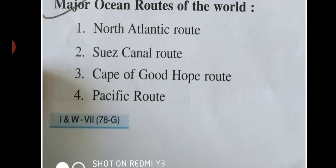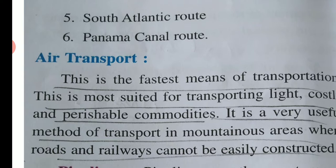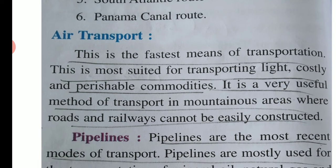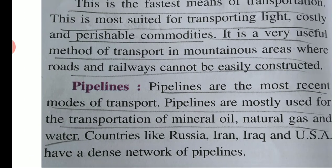Some major ocean routes are the North Atlantic Route, Suez Canal Route, Cape of Good Hope Route, Pacific Route, South Atlantic Route, and Panama Canal. Air transport is the fastest but very costly mode because of aviation fuel, which is very expensive. It is suited for transporting light but perishable commodities, and is mainly used in mountainous areas where roads or railways cannot be constructed. Pipeline system is a recent mode of transport used for mineral oils, natural gases, and water.